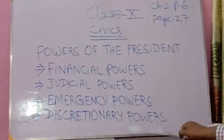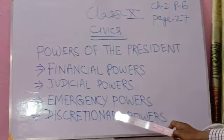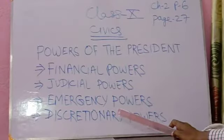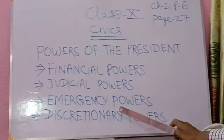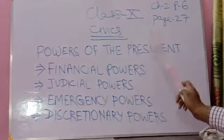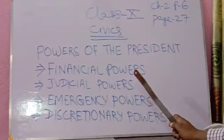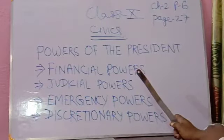Let us start with financial power. The president has the following financial powers. First, money bills — money bills cannot be introduced in the Lok Sabha without the president's consent. This is the first financial power of the president. Next, the budget — the annual budget containing the estimate of income and expenditure of the union government for the following year is laid before the parliament by the finance minister on behalf of the president.